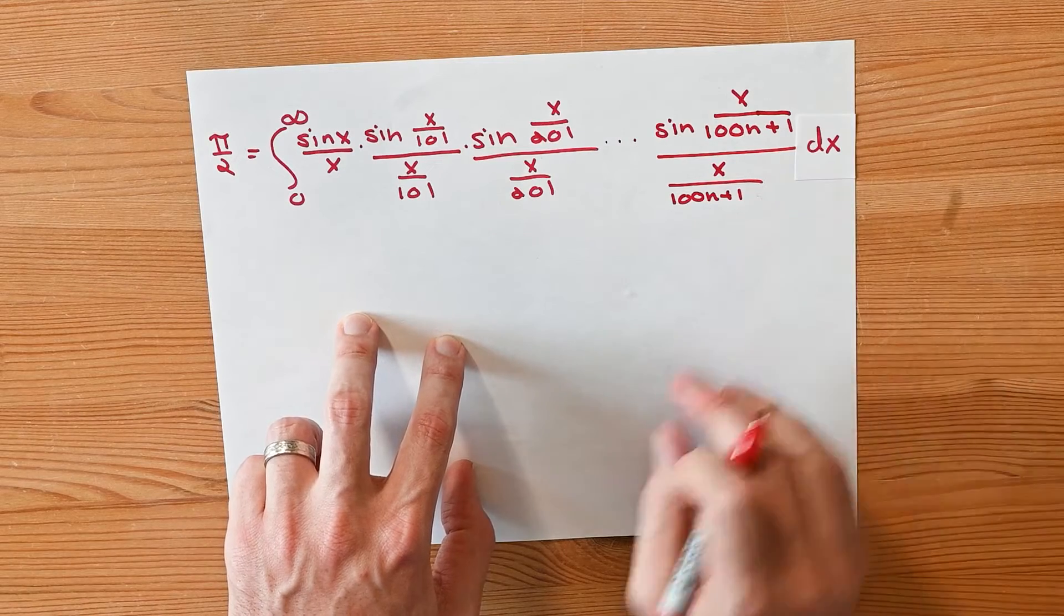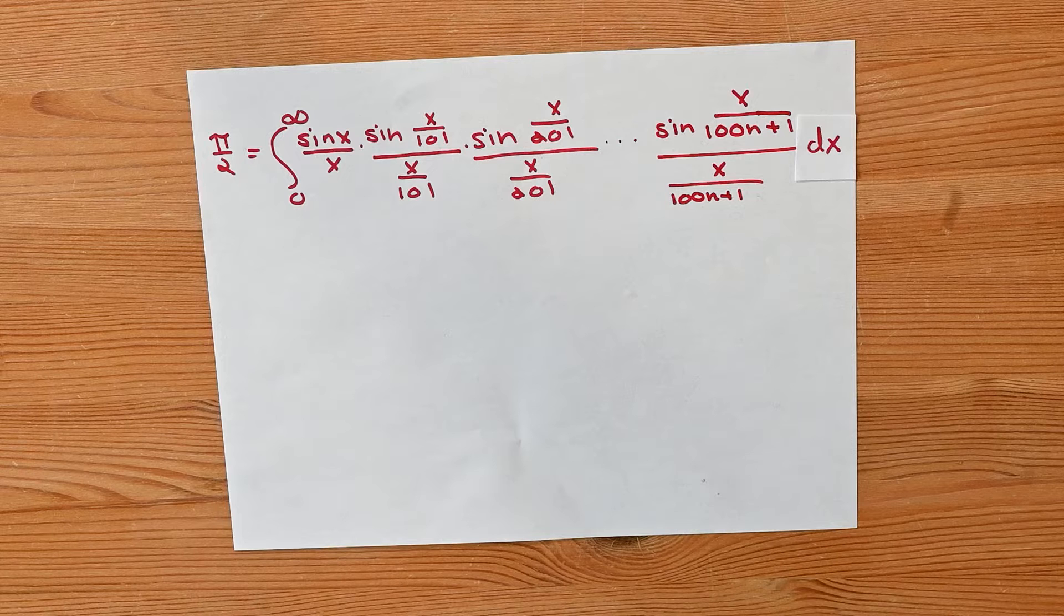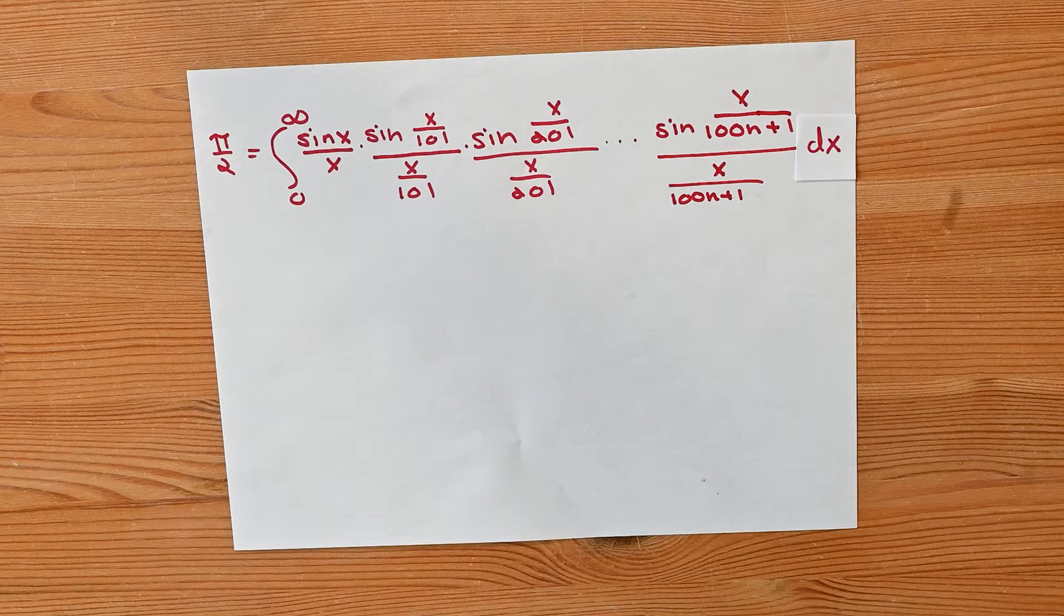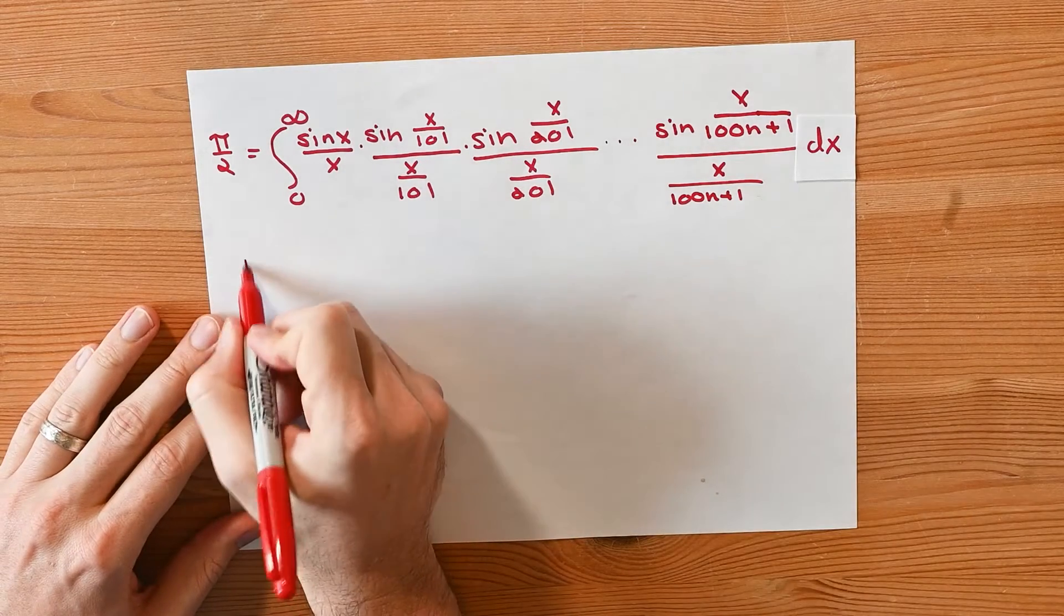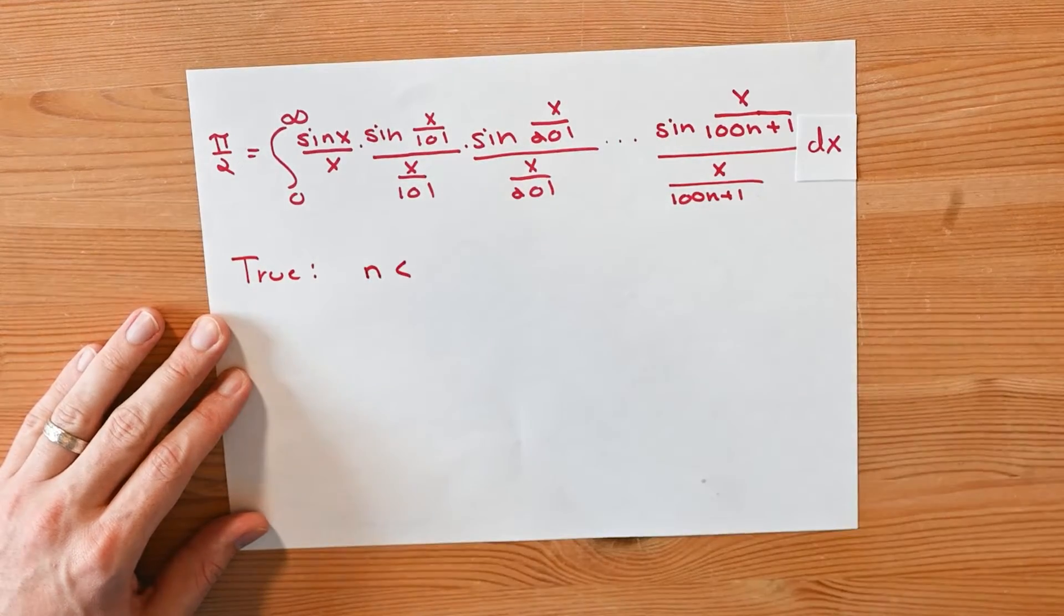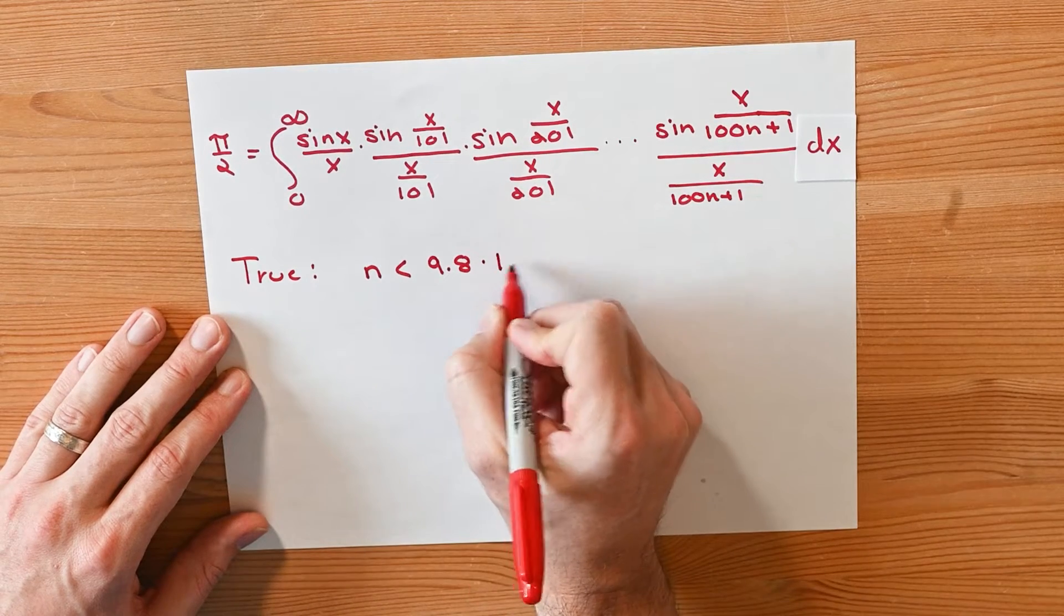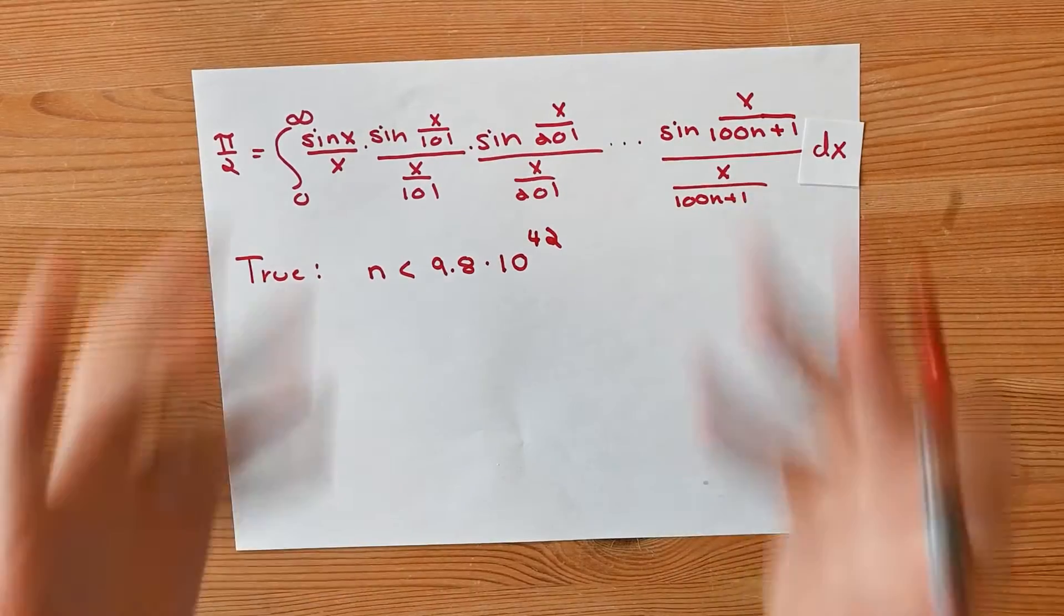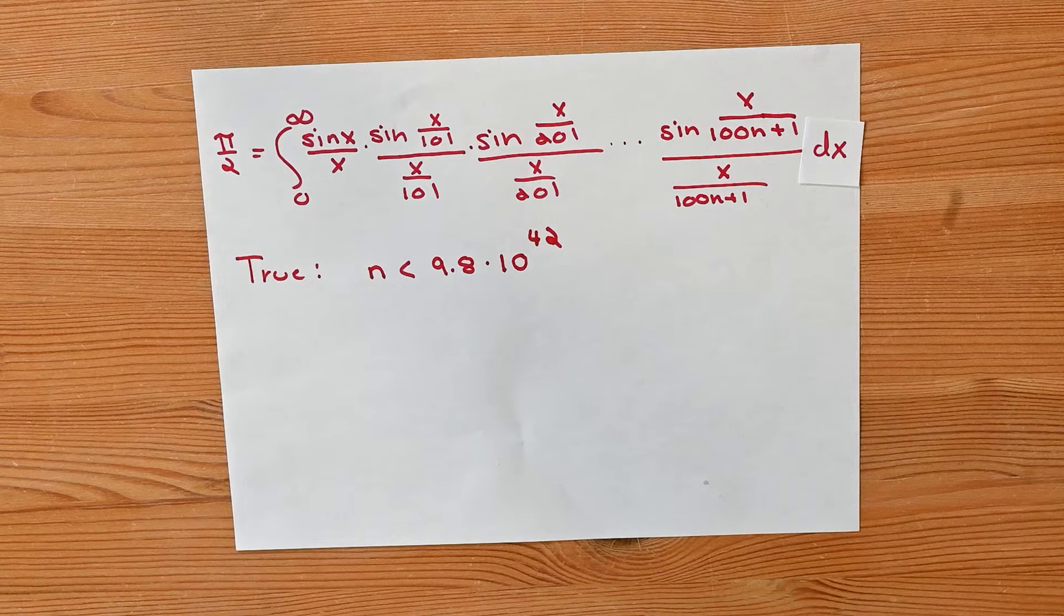Is this always true? Is this true for all possible values of n? We saw it true for n equal to 0, 1, and 2 via Maple Calculator. Now, are you ready for this insanity? This is going to be true for all values of n that are less than 9.8 times 10 to the power of 42. That is insane. For almost 10 to the 43 values of n, this is true. It is always equal to pi over 2.